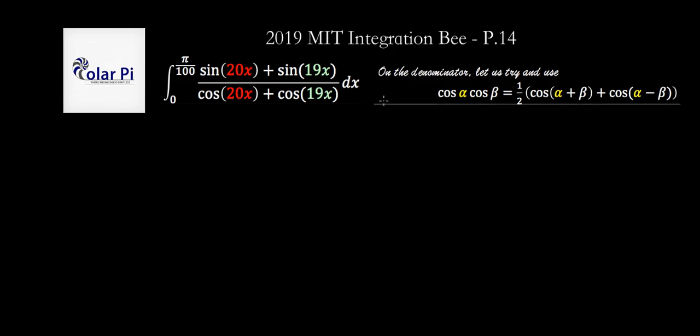Okay, so let's try and use this here in this denominator. In order for us to use this to go from the sum to the product, first notice that we've got to get rid of this one-half. That's easy—just multiply both sides by two. But we'd also want alpha plus beta to be 20 and alpha minus beta to be 19.